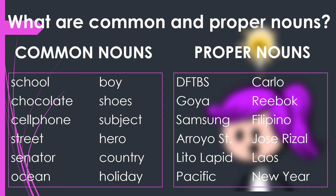Examples of proper nouns for these common nouns are: for school, Tinkerbell School; for boy, Carlo; for chocolate, Goya; for shoes, Reebok; for cell phone, Samsung; for subject, Filipino; for street, Arroyo Street; for hero, Jose Rizal; for senator, Lito Lapid; for country, Laos; for ocean, Pacific Ocean; and for holiday, New Year.